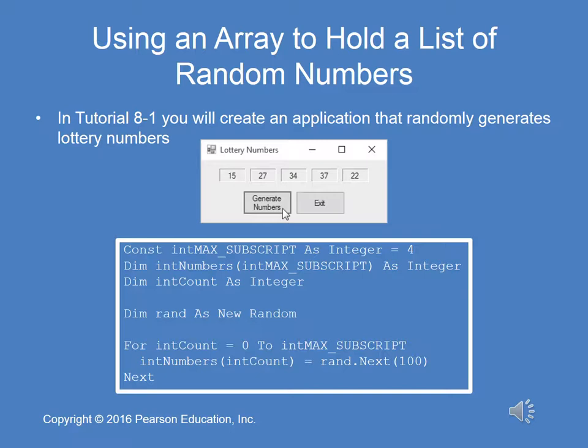Here's the for loop used to fill the array. The array, because it has an int max of 4, will hold 5 elements: 0, 1, 2, 3, and 4. So for int count equals 0 to int max subscript, which is 4 — first time through the loop, int numbers sub 0 will equal rand.next(100). Then we'll go through the loop again; int count will equal 1, so int numbers sub 1 will equal the next random number between 0 and 100, and so on.